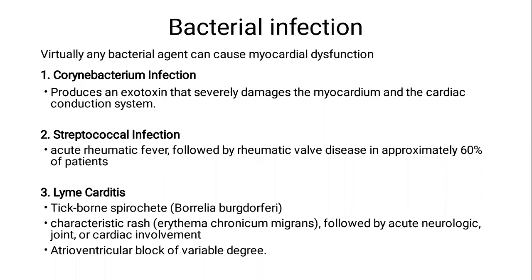Streptococcal upper respiratory tract infection evokes an autoimmune reaction, leading to the development of rheumatic heart disease, which is endemic in Egypt. Lyme carditis, mediated by the tick-borne spirochete, leads to a characteristic rash — erythema chronicum migrans — followed by acute neurologic, joint, or cardiac involvement. Regarding its cardiovascular manifestation, it leads to transient atrioventricular block of various degrees.